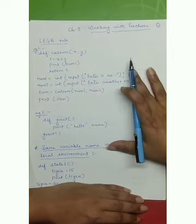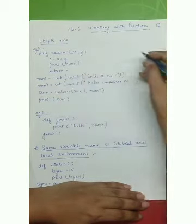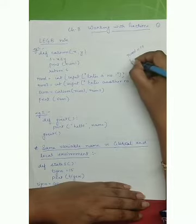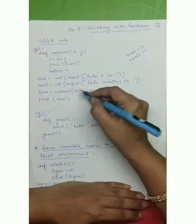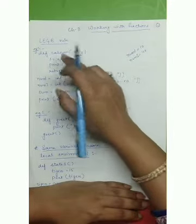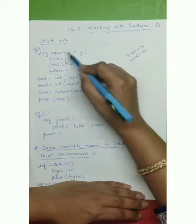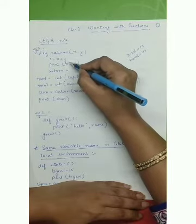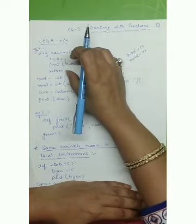So what happens here? First, the two variables are created. Let's say num1 equals 10 and num2 equals 40. The calcum function is called, so x gets 10 and y gets 40. We calculate the sum and then print num1. Now num1 is not present in the local scope of calcum, so it is going to look for it in the global environment. There is no enclosing environment for the calcum function.